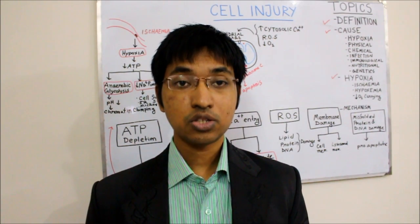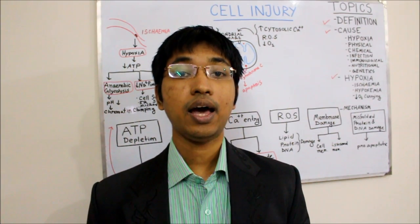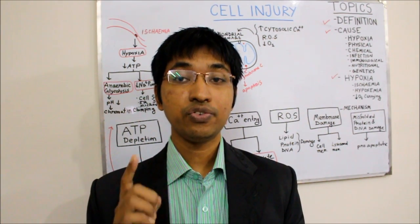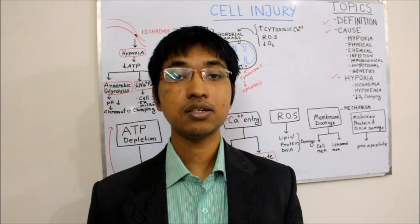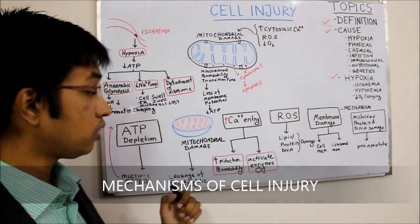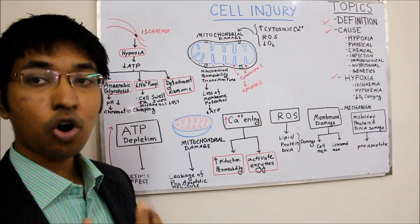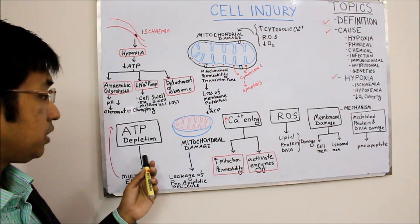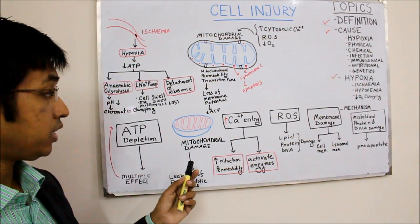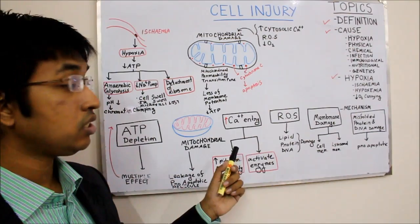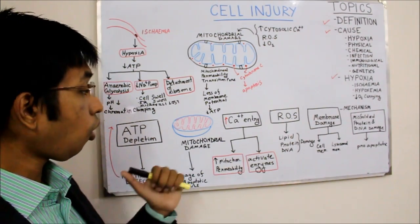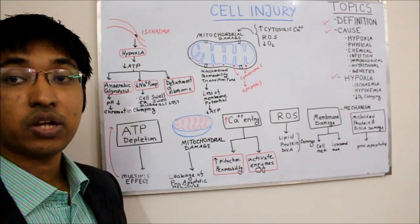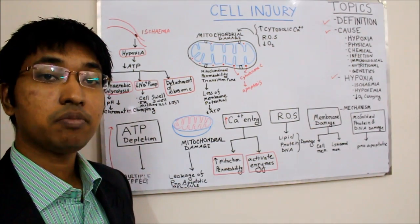In this video, we will discuss those different mechanisms of cell injury in detail and then we will discuss about reversible and irreversible cell injury. The mechanisms of cell injury include ATP depletion, mitochondrial damage, increased calcium entry, reactive oxygen species, membrane damage, and misfolded protein. All these mechanisms can cause cell injury and we will discuss them one by one.